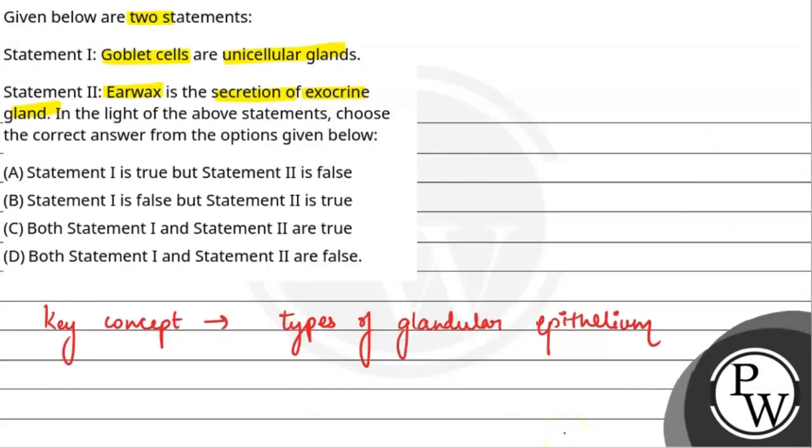So let's see the answer to this question. Statement A was goblet cells are unicellular glands, this is correct. And in the second statement, ear wax is the secretion of exocrine glands. This is also a correct statement because ear wax is released through a duct. So the correct option is both statement 1 and statement 2 are true.